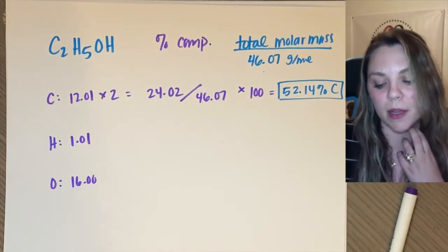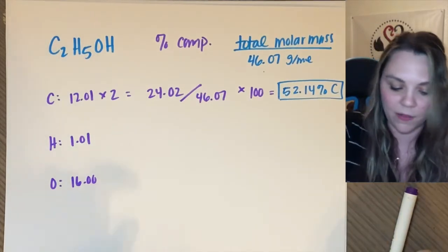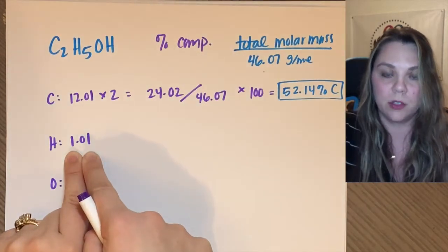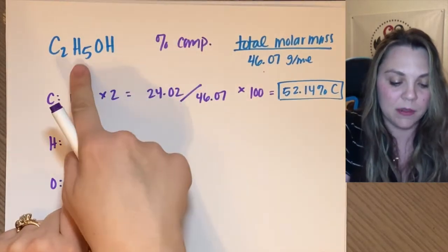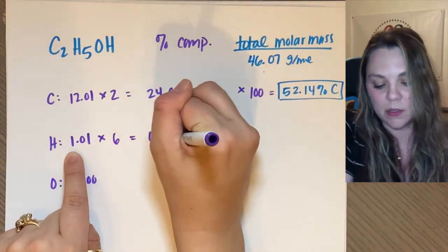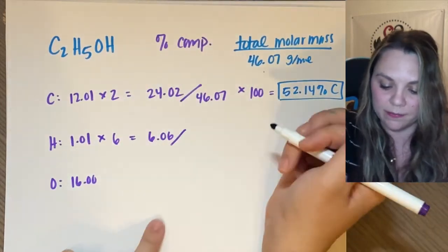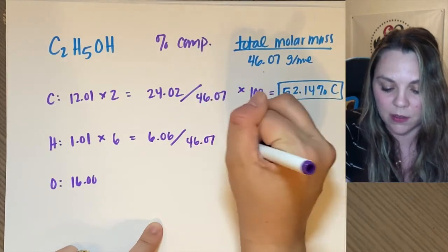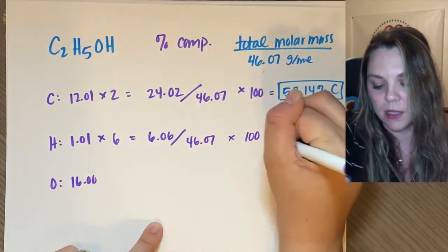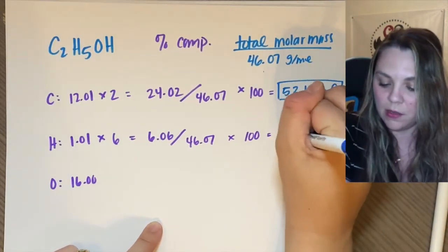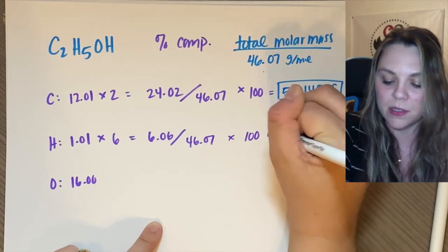This ethanol compound is 52 percent carbon. For hydrogen, each hydrogen is 1.01 grams per mole times six of them. 6.06 divided by the total, which is 46.07, times 100 is 13.15 percent.